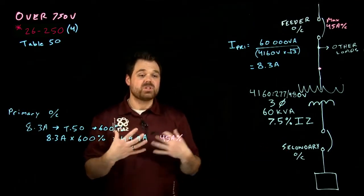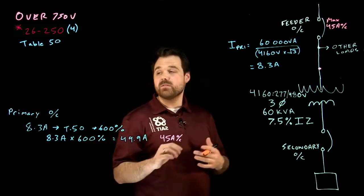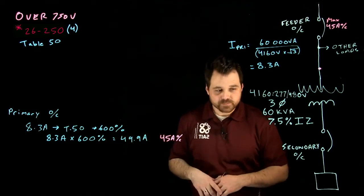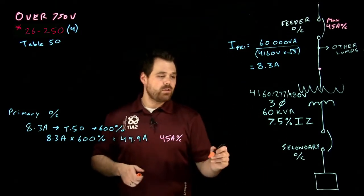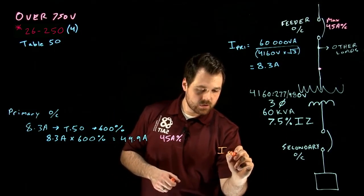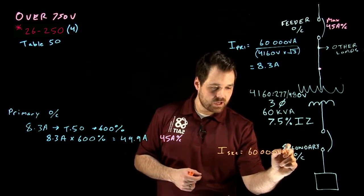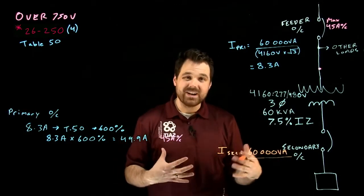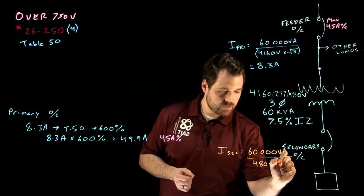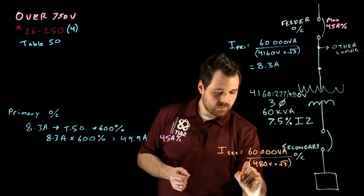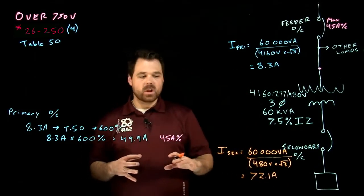Where it gets a little more interesting is talking about the secondary. With the secondary, we're still in subrule 4. It tells us the same thing. It's going to be based off of table 50, 26,252, subrule 4. What we want to do is we need to know our secondary current. I secondary is going to be the same thing. 60,000 VA divided by our 480 or our line voltage, times root 3, which gives us a secondary current of 72.1 amps.